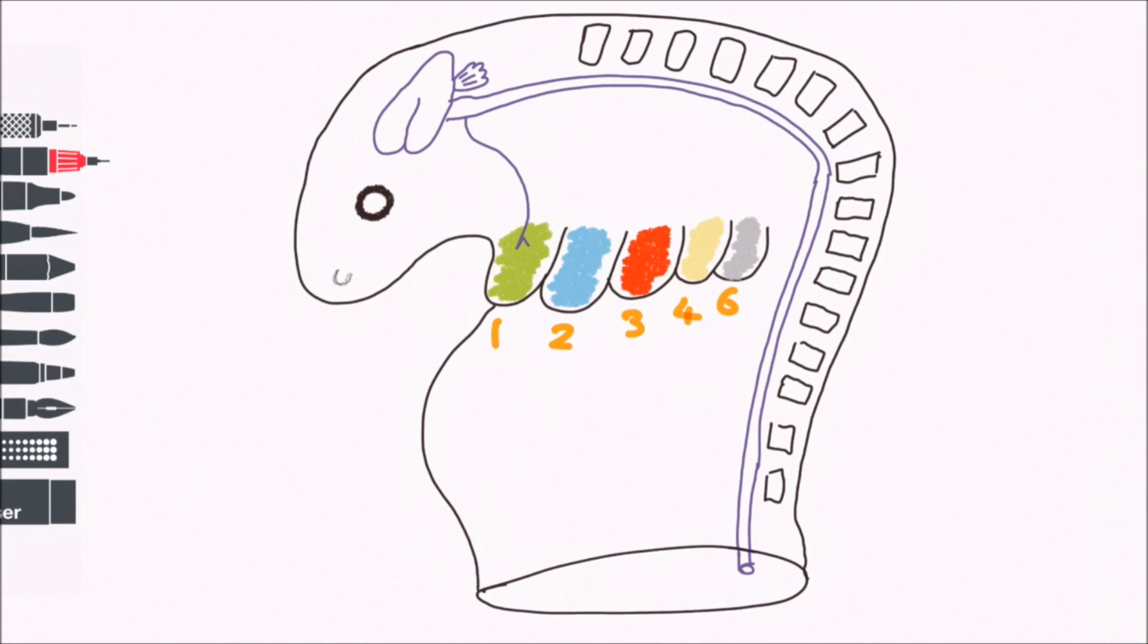The first pharyngeal arch, also known as the mandibular arch, is supplied by the maxillary and mandibular divisions, that's V2 and V3, of the trigeminal nerve.